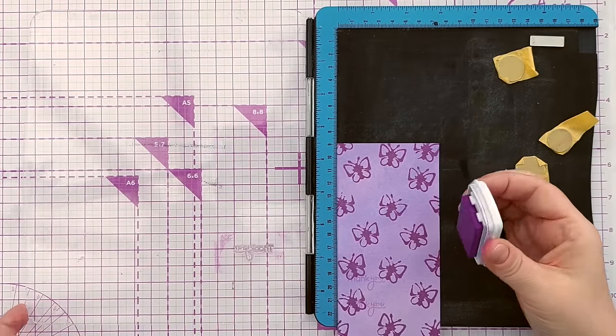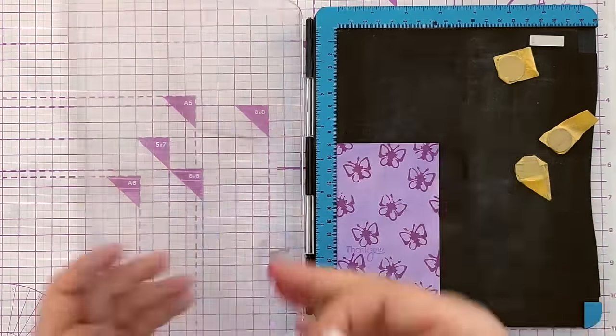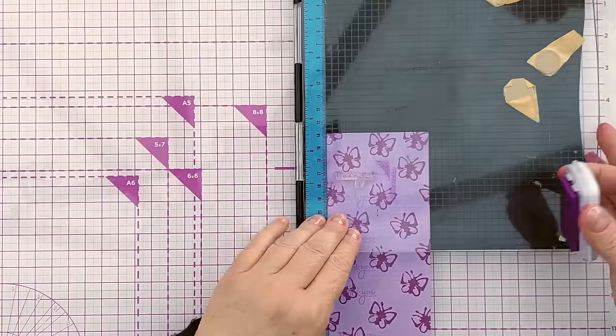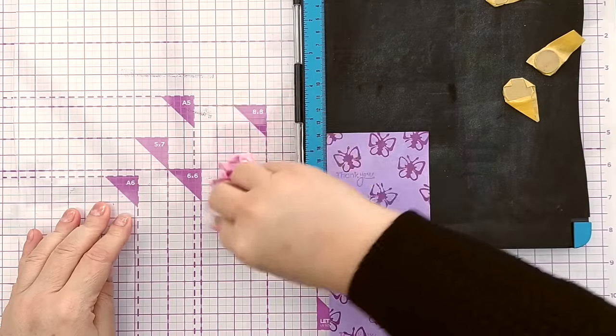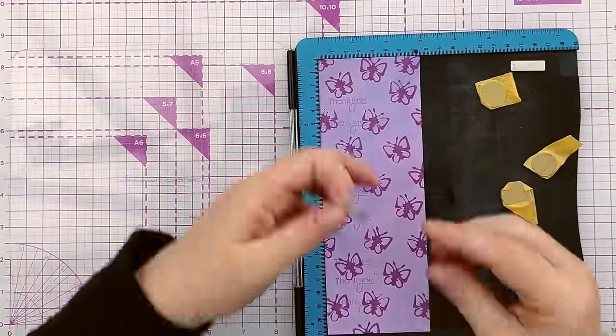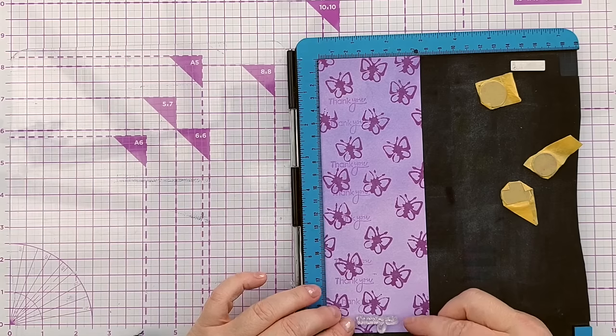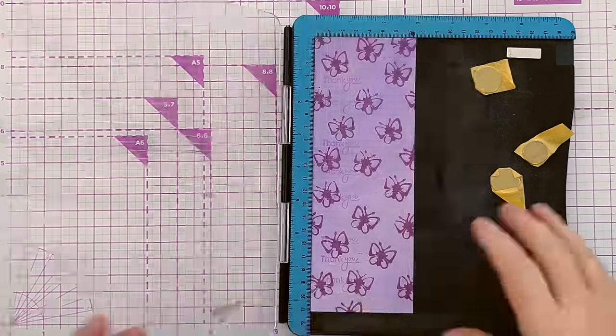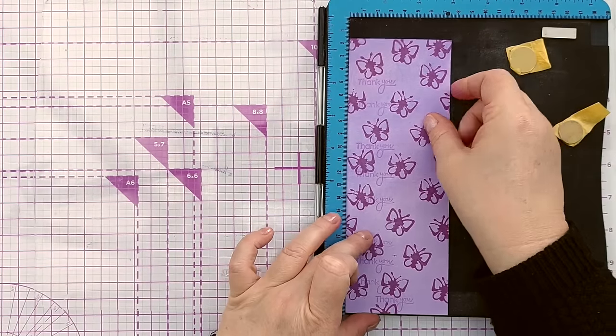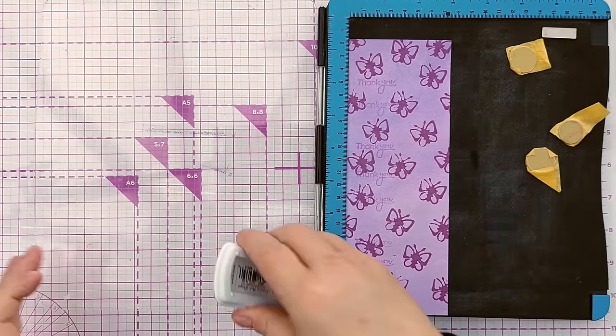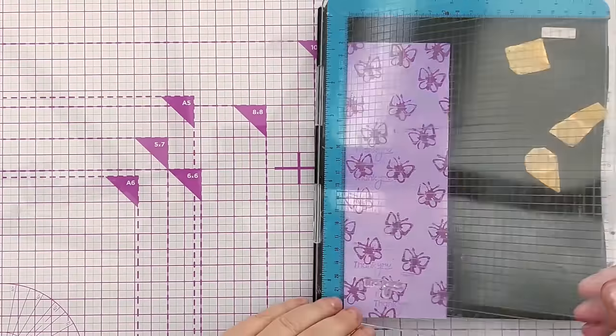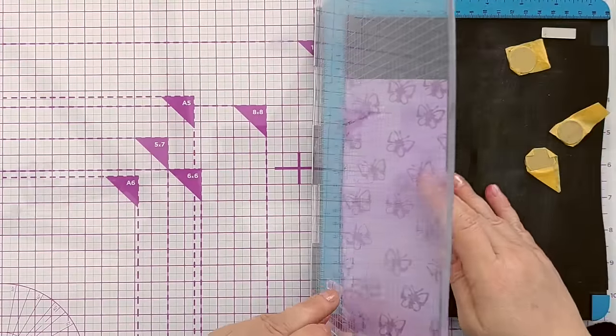But everything is still horizontal and lined up how I want it. Now I'm going to do that again but move the thank you into a different position. I don't want the thank yous to overlap really, although it doesn't matter if they do slightly. But I will just shift things about so I get them where I want them.